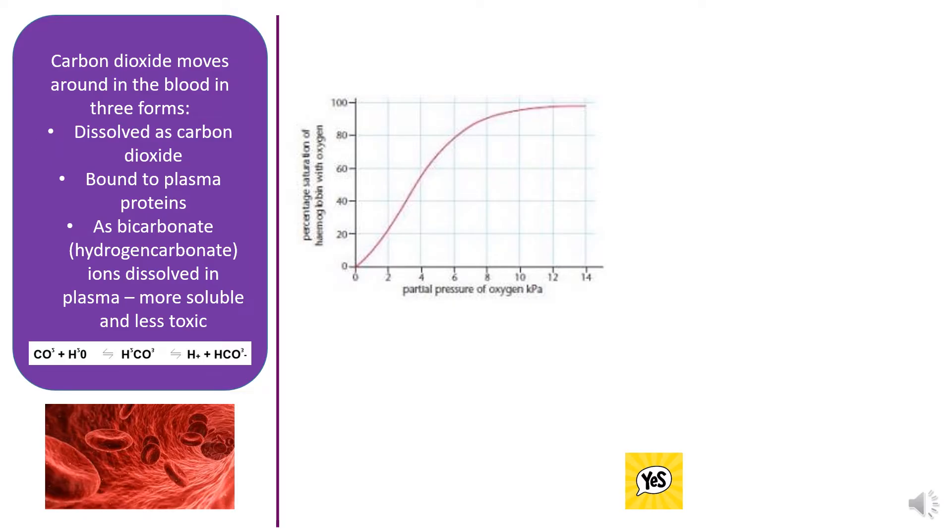To start with, we need to know how carbon dioxide moves around the body. It can move around in the blood in different forms: dissolved as carbon dioxide, though there's not actually a huge amount that travels like this; bound to plasma proteins, which you learned about in option D part 3; and as bicarbonate or hydrogen carbonate ions dissolved in the plasma.